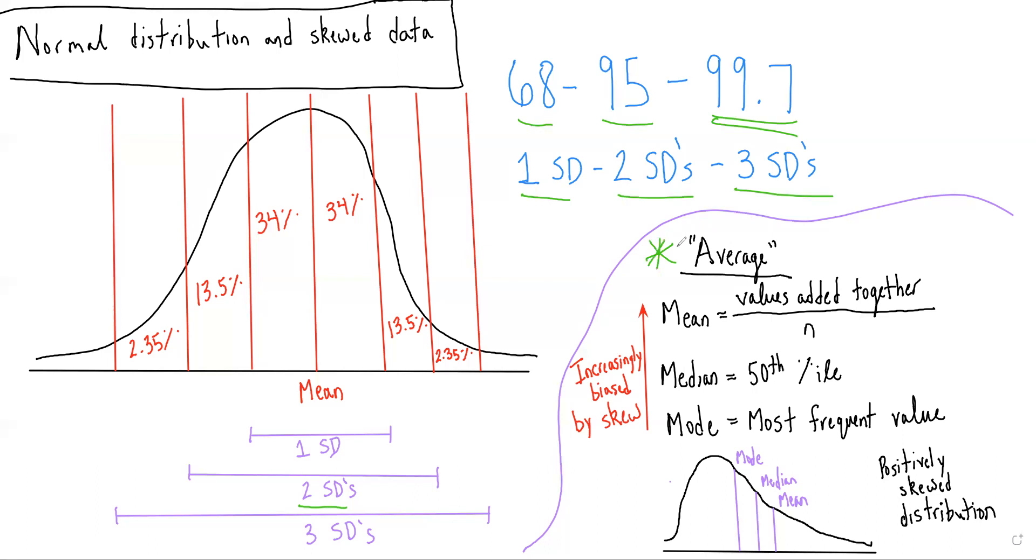The mean is the one that people are most familiar with, where we add all the values together and then divide by the total sample size to get a mean value for what was present in this population.